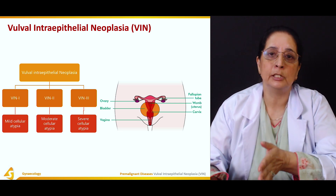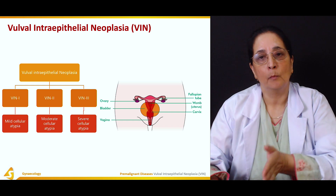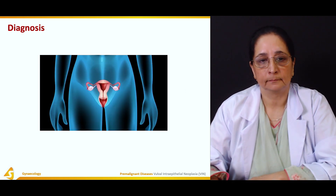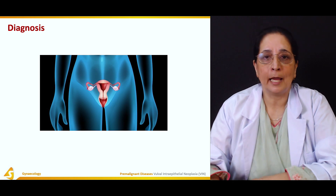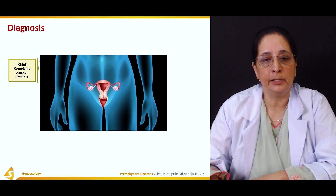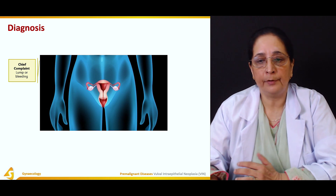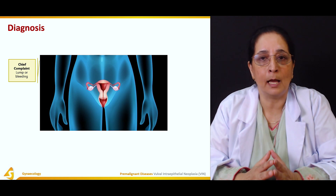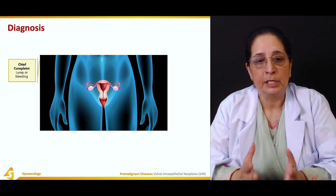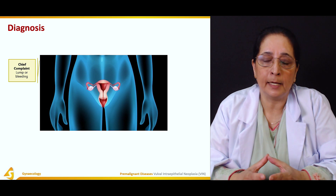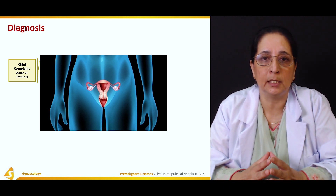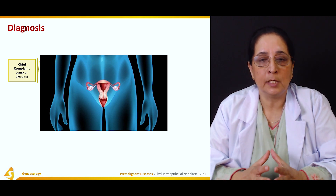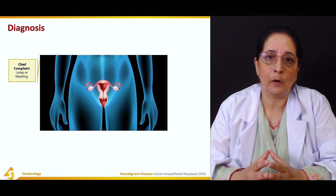To summarize the three types: VIN 1 — mild atypia, VIN 2 — moderate atypia, VIN 3 — severe atypia. Regarding diagnosis of intraepithelial neoplasia, the chief complaint is what the patient presents with to the doctor. Patients typically complain of a lump or bleeding as the first thing they notice.